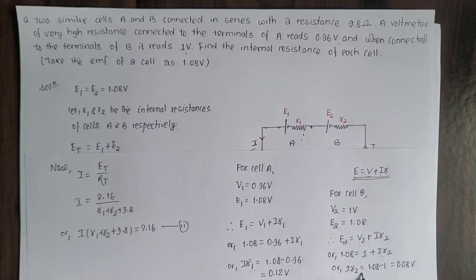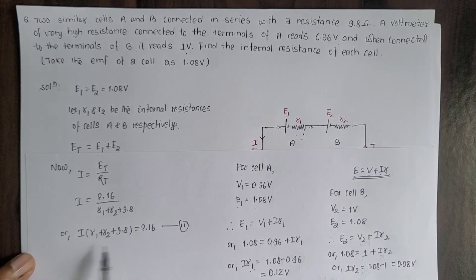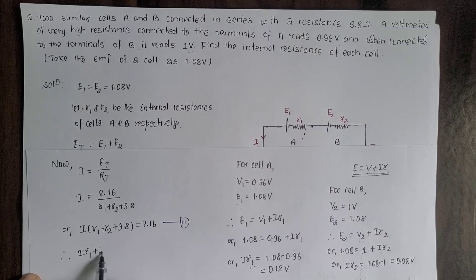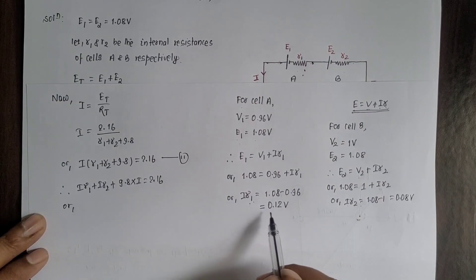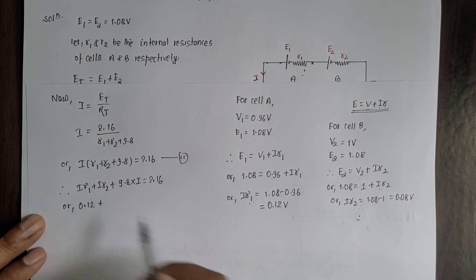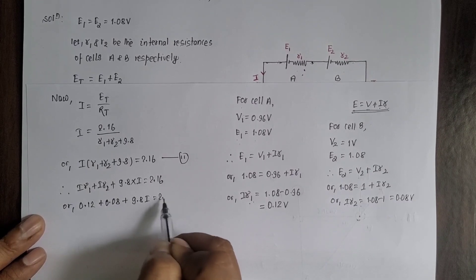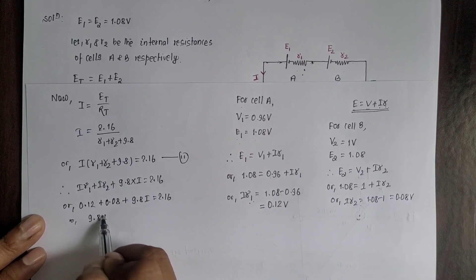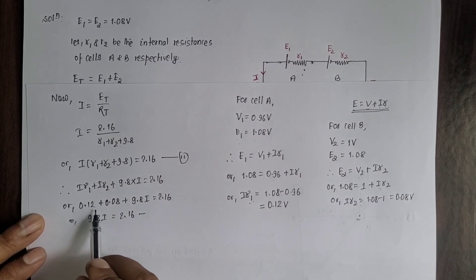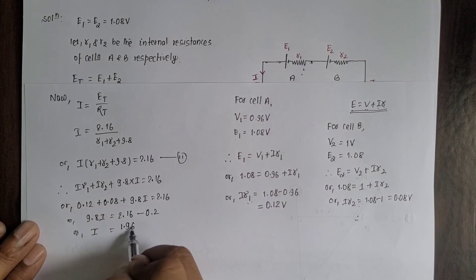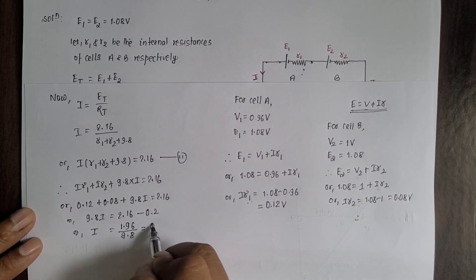Now substituting the values of iR1 and iR2 into equation number 2 to find the circuit current I: i times R1 plus i times R2 plus 9.8 times i equals 2.16. Substituting: 0.12 plus 0.08 plus 9.8i equals 2.16. So 9.8i equals 2.16 minus 0.20, which equals 1.96. Therefore i equals 1.96 divided by 9.8, which equals 0.2 ampere.